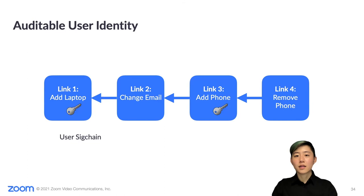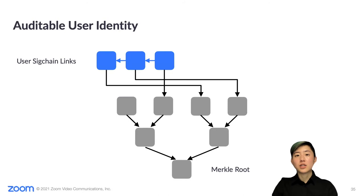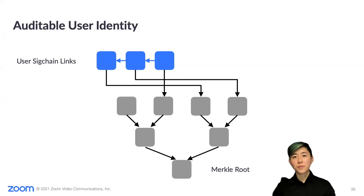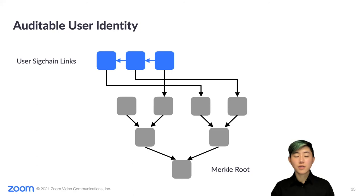We store this information in an append-only list called a SIG chain. By reconstructing the entire SIG chain for a user, we get the current state of their identity. These user identities will then be committed to a transparency tree, which is built on top of a Merkle tree. The transparency tree is hosted by Zoom but is externally auditable. This prevents the server from forking a user's SIG chain — showing different versions of the same SIG chain to different users. Because all changes made to a SIG chain must be committed to, any server misbehavior will always be able to be detected.